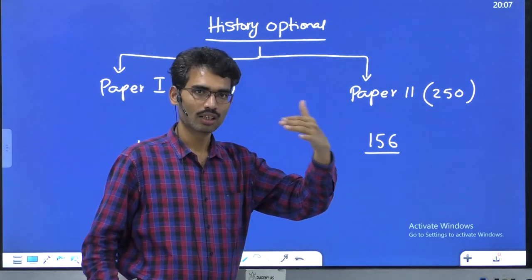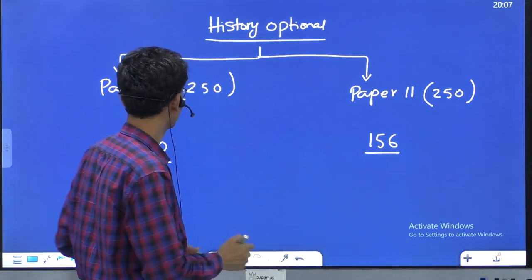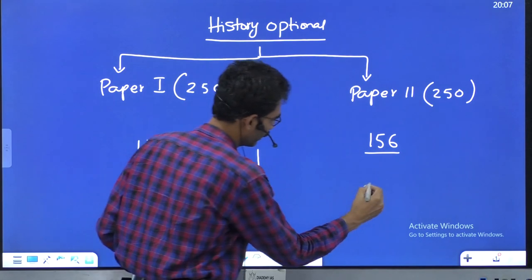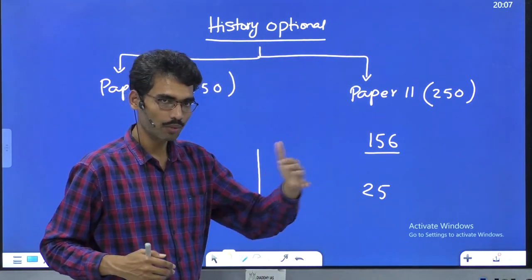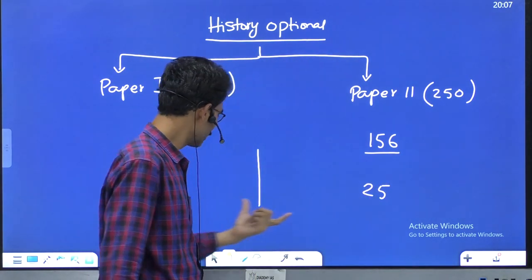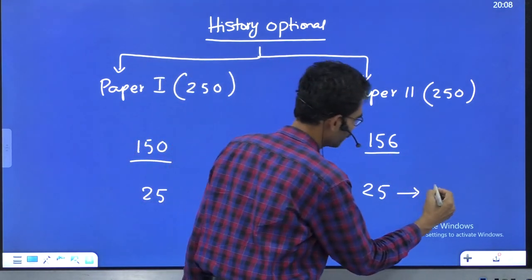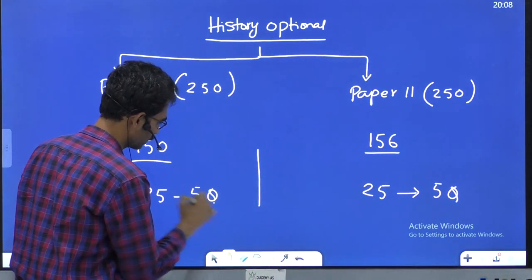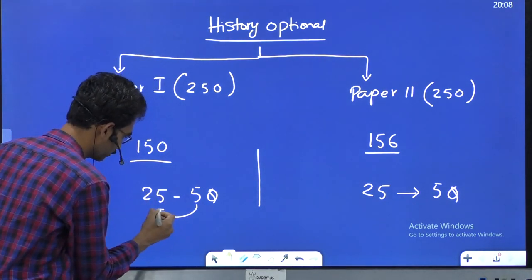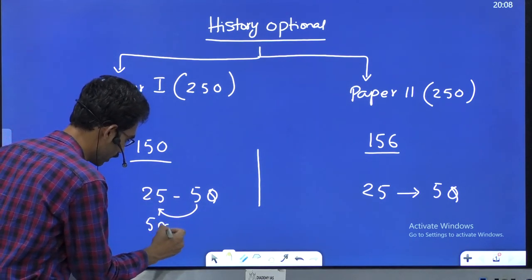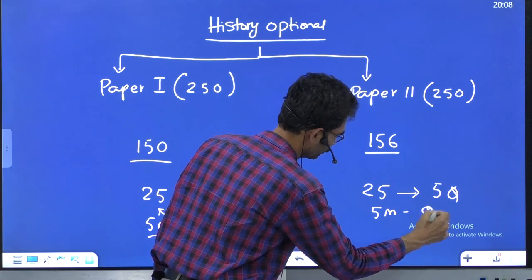If you split those 50 extra marks — 25 in Paper 1 and 25 in Paper 2 — it becomes manageable. With five questions in each paper, reaching 25 extra marks means only 5 extra marks per question. Each question contains sub-parts A, B, C, so it becomes even smaller. This is how you need to think when aiming for top scores.